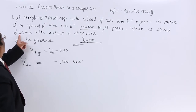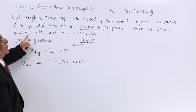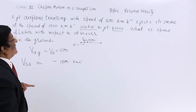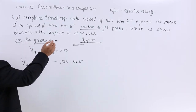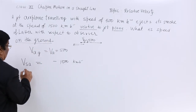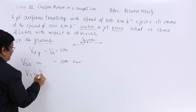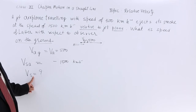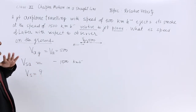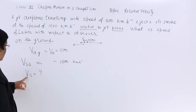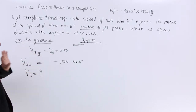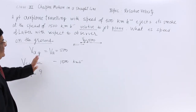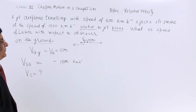What is the speed of the latter? Latter means smoke. What is the speed of smoke with respect to the observer? The observer is on the ground. So what is asked from us? Speed of smoke with respect to ground — we do not write 'with respect to ground' because ground is at zero velocity, so velocity of smoke automatically means that. So we have to find out the velocity of smoke.